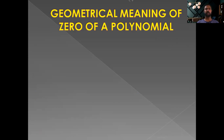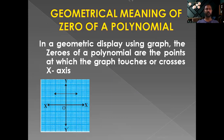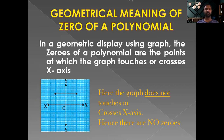Now let us see the geometrical meaning of zeros of a polynomial. Geometrically, the zeros of a polynomial are the points at which the graph touches or crosses the x-axis. If the graph neither touches nor crosses the x-axis, then there are no zeros for that function.